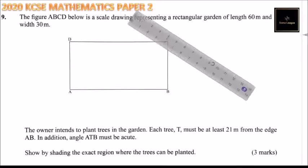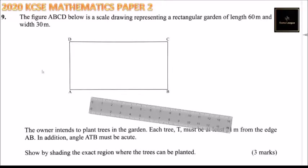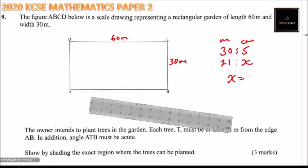And we are told that that width is 30 meters. So we can say this is 30 meters. This is 60 meters. Now, if we have 30 meters being represented by 5 centimeters, then how many centimeters represent 21? So we can call that X.